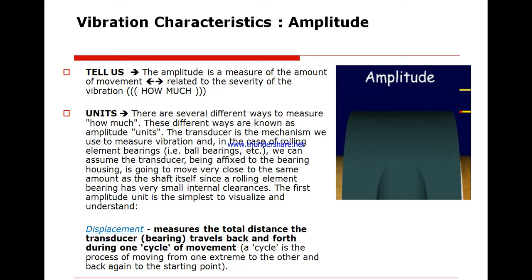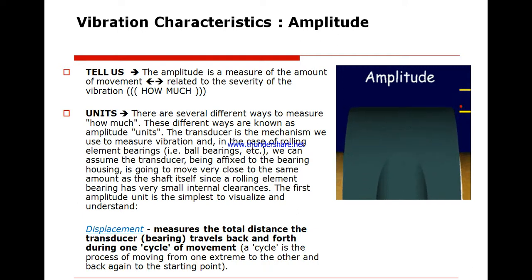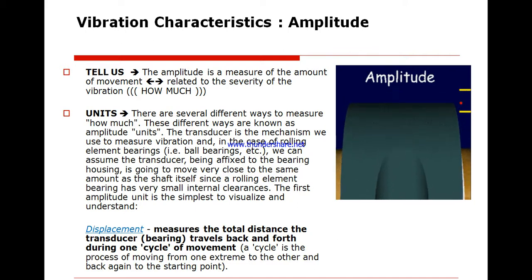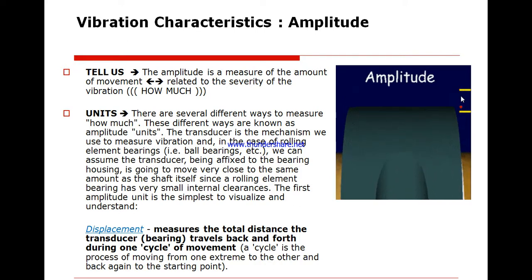Starting with amplitude — how much movement is occurring. You can see the bearing on the shaft moving upward and downward, upward and downward. It is a sinusoidal motion, moving upward and downward between two limits.